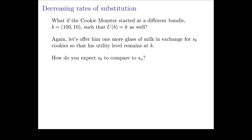So let's say Cookie Monster started at a different bundle — let's say bundle B. At bundle B, his utility level is K as well. How is bundle B different? He's getting 100 glasses of milk but only 10 cookies. Again we say, hey Cookie Monster, I'm going to give you one more glass of milk in exchange for SB cookies.